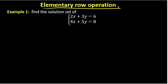The elementary row operation is used to establish the boundary of the order. Example one: find the solution set of the simultaneous equation using the matrix method.